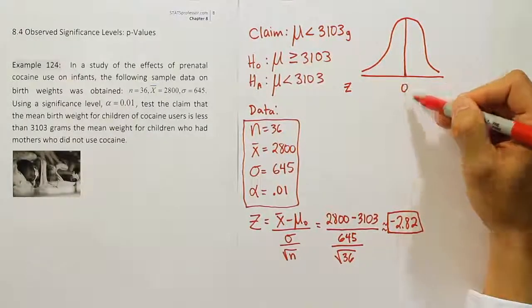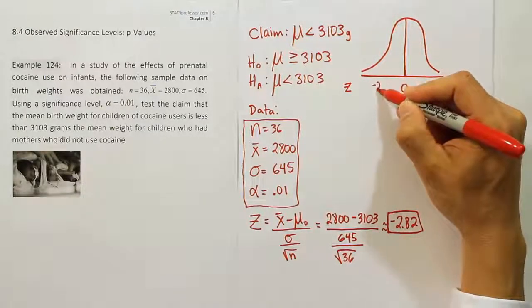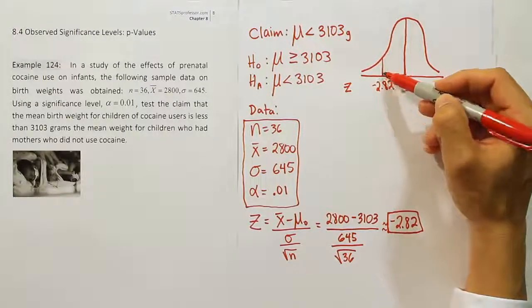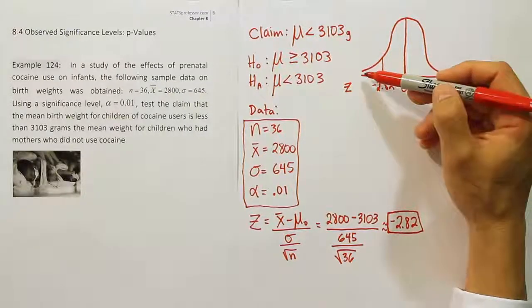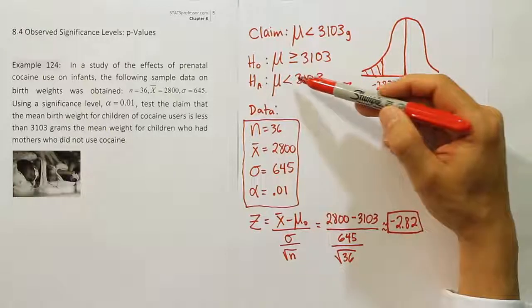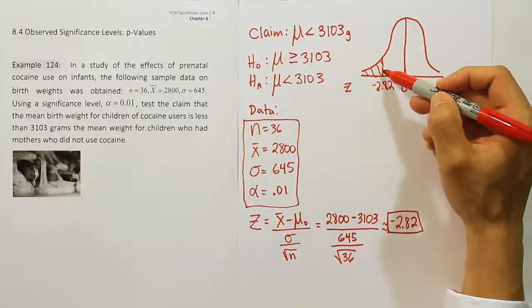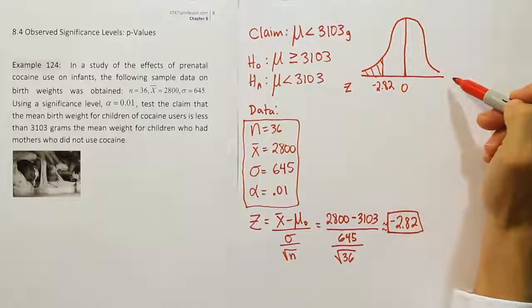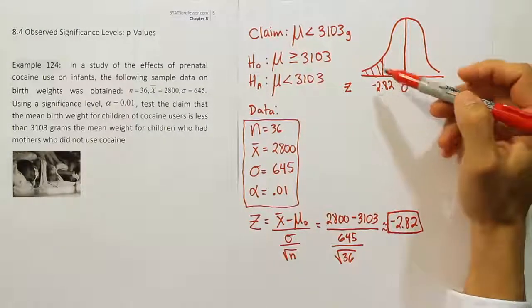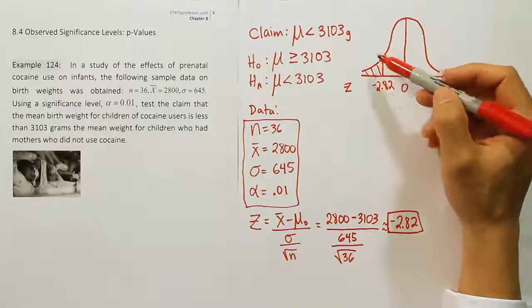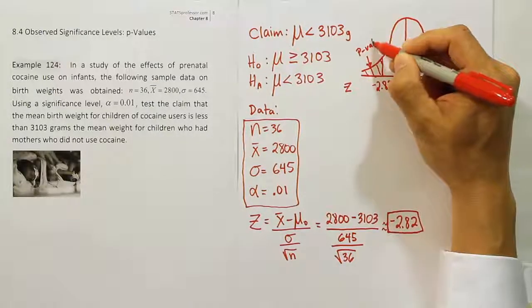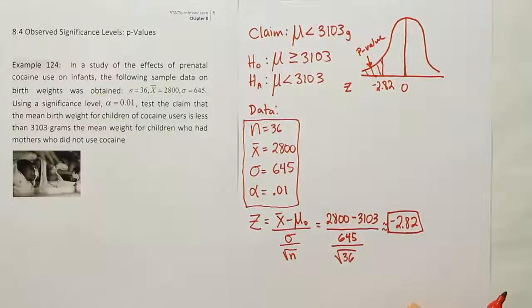So where would the test stat go relative to zero? It would be on the left. So negative 2.82. And because H_A says it's a left-tailed test, we draw a line above the test stat, and we find the area to the left. We're finding the area to the left because it's a left-tailed test, because of H_A. If this had been a right-tailed test, we would have found the area from here all the way over to the right. But it's a left-tailed test here, so we find the area to the left. So I shade the area to the left of this test stat, and I basically indicate to myself that I must find this area. This area is going to be the p-value.